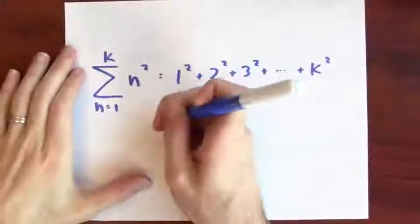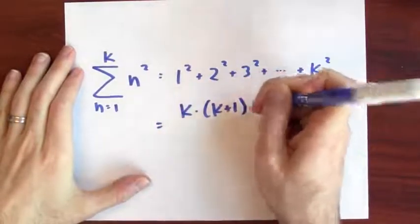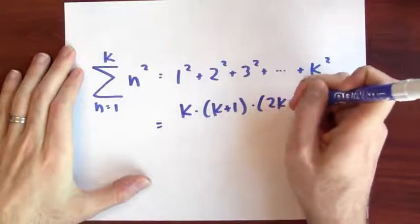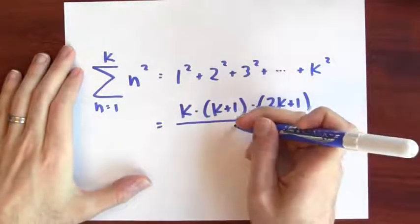Quite shockingly, the resulting formula ends up looking really nice. This ends up being equal to k times k plus 1 times 2k plus 1 all over 6.